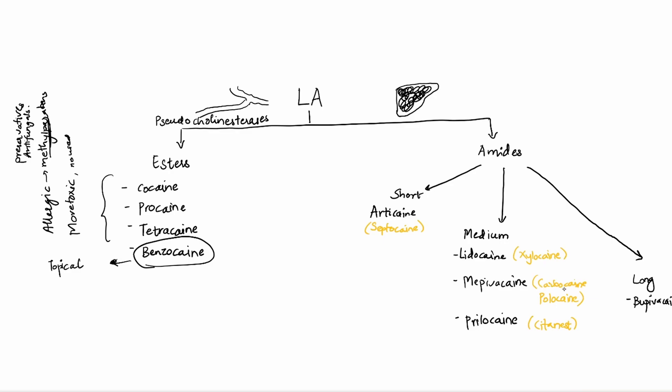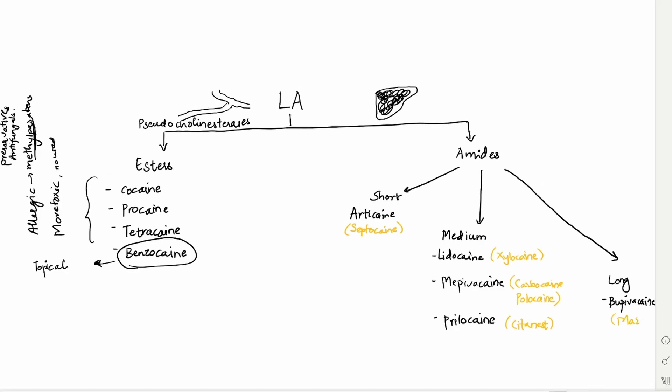Now carbocaine is the one without vasoconstrictor. And prilocaine, citanest, the citanest plain is the one which many practitioners actually give before giving either septocaine or lidocaine in terms of a nerve block. Because when you give prilocaine, it's very easier to give. It's the least painful injection because of its pH. Then bupivacaine has trade name as marcaine.